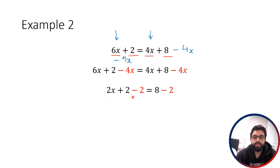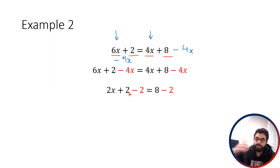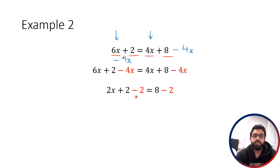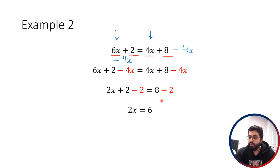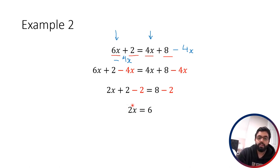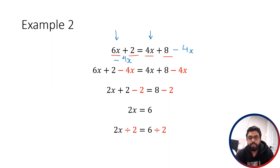Now looking at the left-hand side, we want to get 2x by itself. We go through our BEDMAS steps in reverse. We see this addition of plus 2 that we want to get rid of, so we subtract 2 from both sides: 8 minus 2 gives us 6. So 2x = 6. At this point you might clearly see what x is equal to. We want to get rid of that multiplication by 2, so we divide by 2 on both sides. We're left with x = 3.